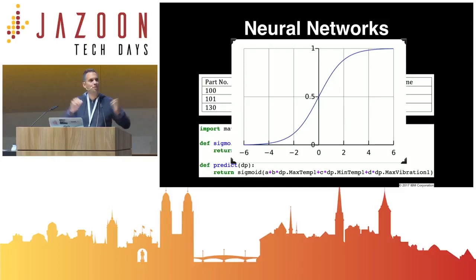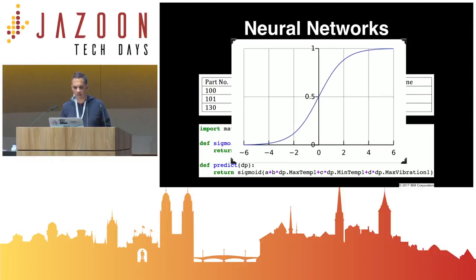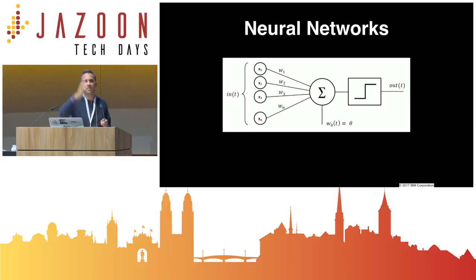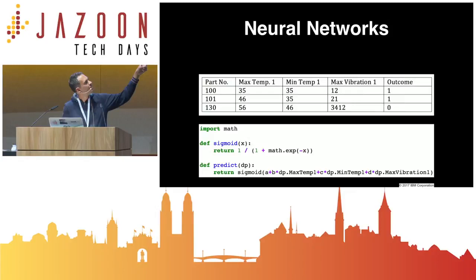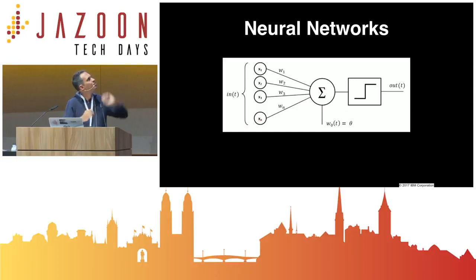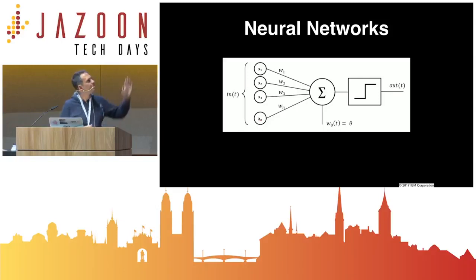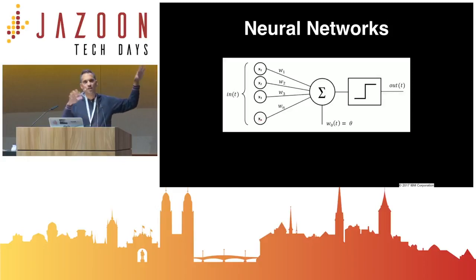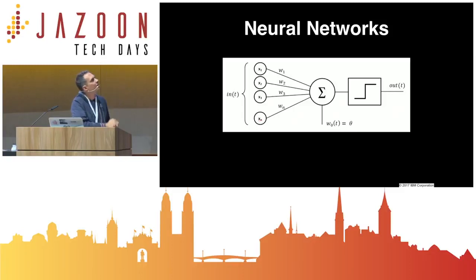So those are the two hello world machine learning models for predicting a continuous and for predicting a categorical value. Neural networks are nothing else than stacked logistic regression models. This is one artificial neuron. You have inputs x1 to xn, and as in linear regression you multiply each by parameters w1 to wn. You sum those up — until the sum symbol you get something like linear regression — and then apply an activation function, which can be sigmoid.